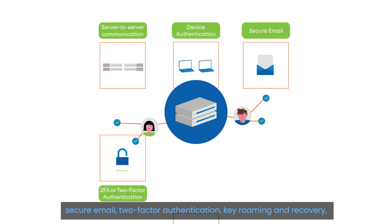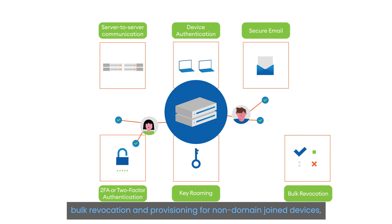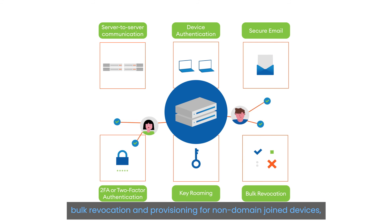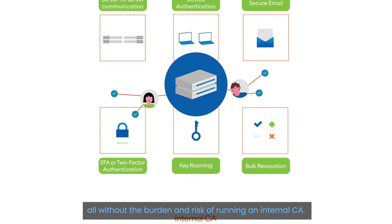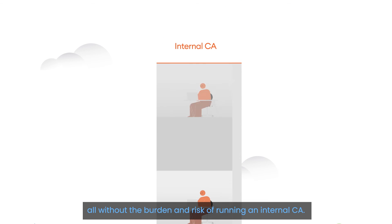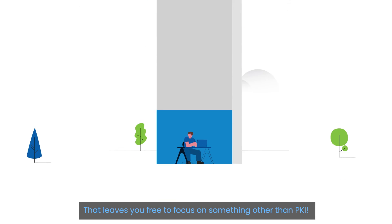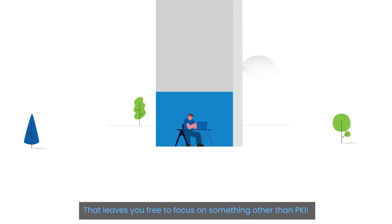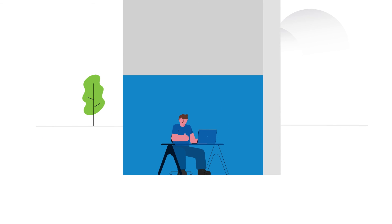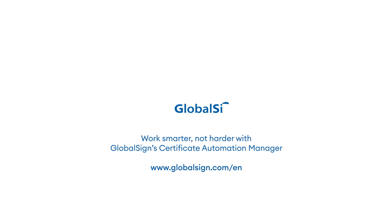Two-factor authentication, key roaming and recovery, bulk revocation, and provisioning for non-domain-joined devices — all without the burden and risk of running an in-house CA. That leaves you to focus on something other than PKI. Work smarter, not harder with GlobalSign Certificate Automation Manager.